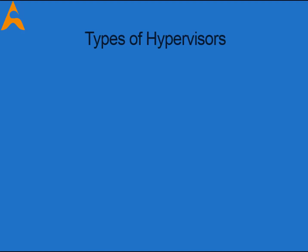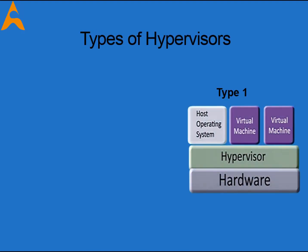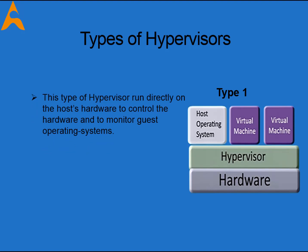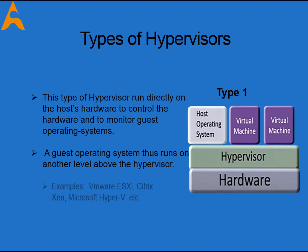Type 1 hypervisors run directly on the system hardware. They are often referred to as native, bare metal, or embedded hypervisors. A virtual environment is created on a server so that numerous different operating systems can run at the same time on one piece of hardware — the hypervisor is installed onto the bare metal just like a standard operating system, and then the virtual machines go directly on top of that. This type of hypervisor performs many functions and has the ability to migrate virtual machine instances between different pieces of hardware in real time.